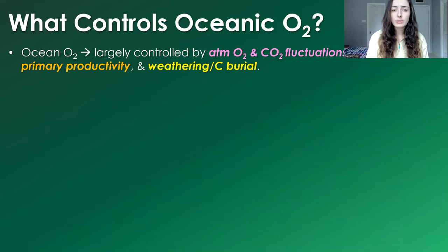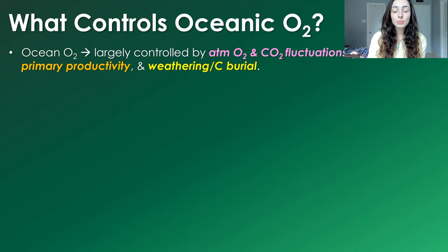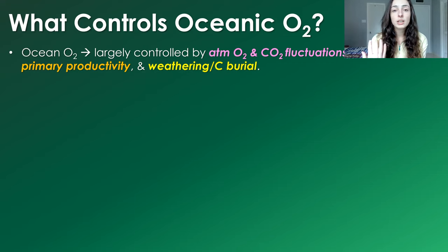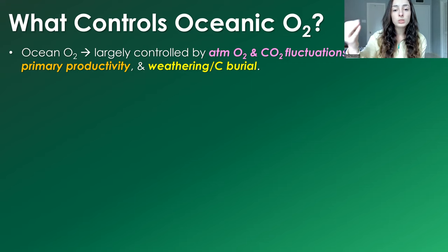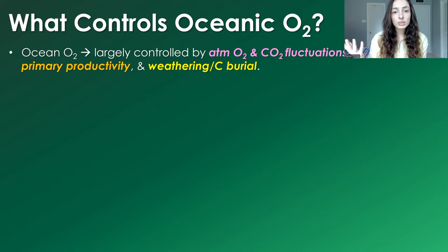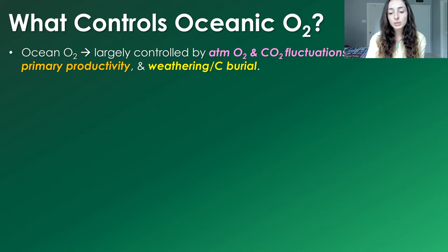So what does control oceanic oxygen concentrations? It's largely controlled by atmospheric oxygen, because atmospheric oxygen obviously interchanges with surface ocean oxygen and they should be relatively in equilibrium, at least in the modern global ocean. Another major control is atmospheric CO2 fluctuations, primary productivity fluctuations, and weathering and carbon burial fluctuations. These all come back to the one thing: oxygen sink versus oxygen source. When you have increased primary productivity, weathering and carbon burial, you have increased atmospheric oxygen because that oxygen is not being used up to decompose organic material — and that also decreases CO2.